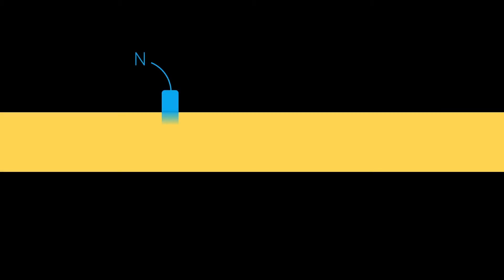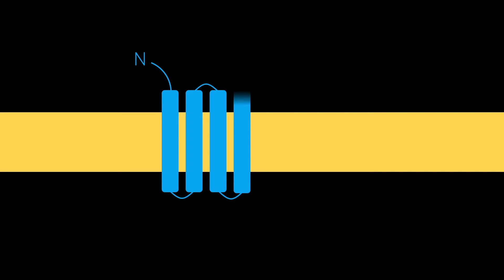These receptors consist of an extracellular N terminus, seven transmembrane domains, and an intracellular C terminus.